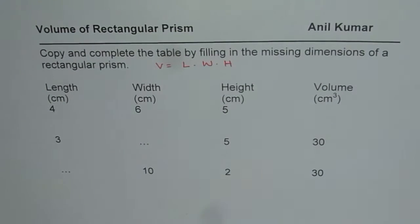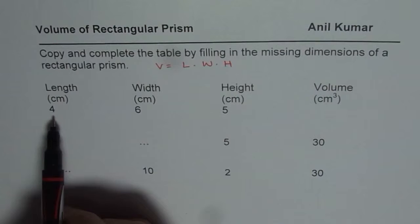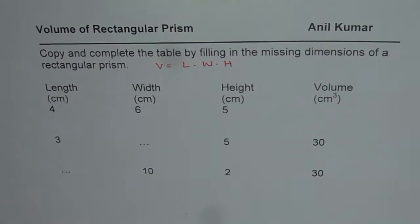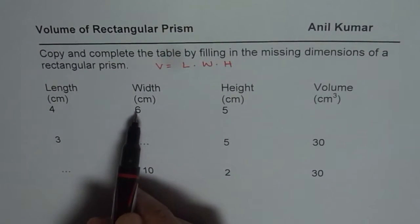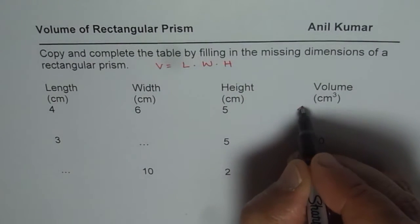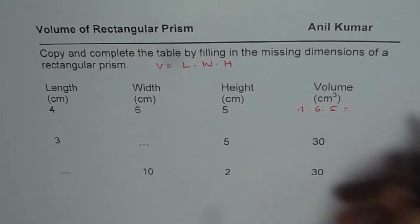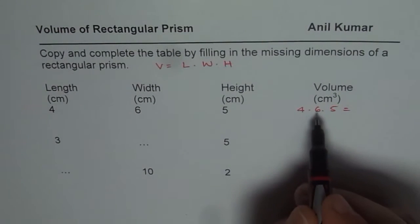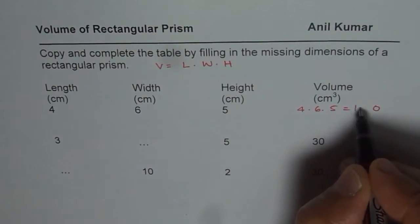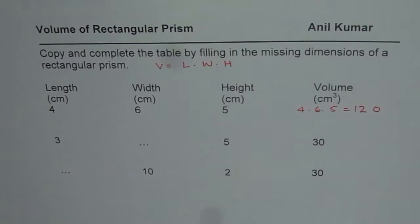The first row has length of 4, width of 6, height of 5 — you need to find the volume. You can pause the video, copy this question, solve and then check with my solution. Volume equals length times width times height: 4 times 6 times 5. 6 times 5 is 30, and 30 times 4 is 120. So the volume is 120 centimeter cubed.